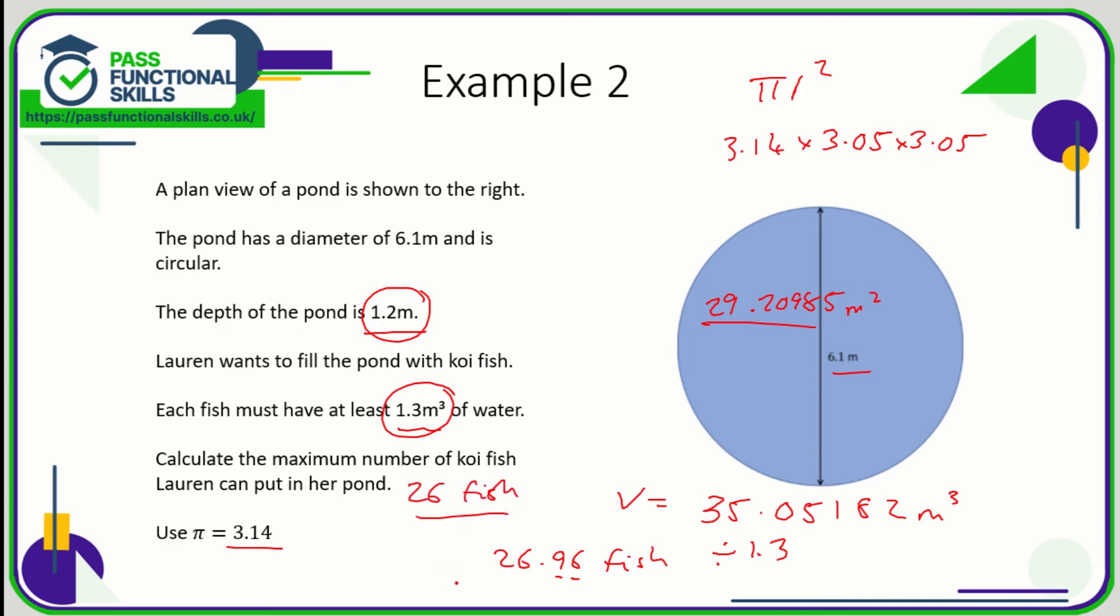Hopefully you can appreciate why we're going to 26, not 27 here, even though 26.96 is so much closer to 27 than 26. But 27 fish would exceed the 1.3 cubic meters per fish.